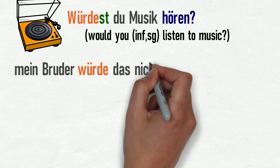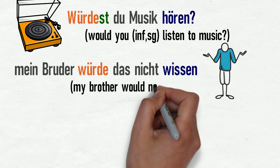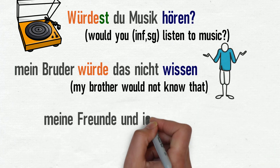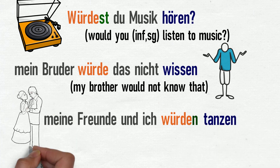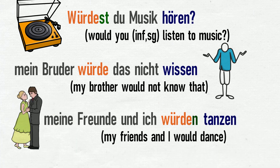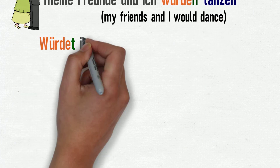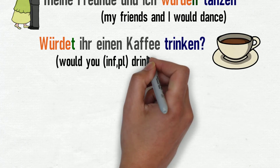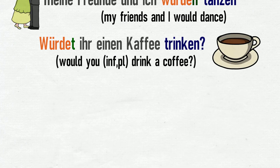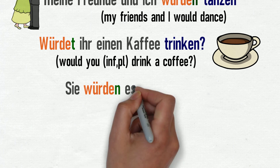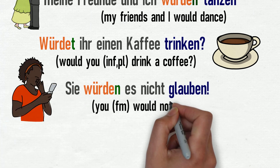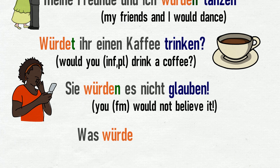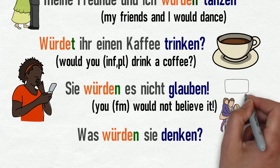Mein Bruder würde das nicht wissen — My brother would not know that. Meine Freunde und ich würden tanzen — My friends and I would dance. Würdet ihr einen Kaffee trinken? — Would you (informal plural) drink a coffee? Sie würden es nicht glauben — You (formal) would not believe it. Was würden sie denken? — What would they think?